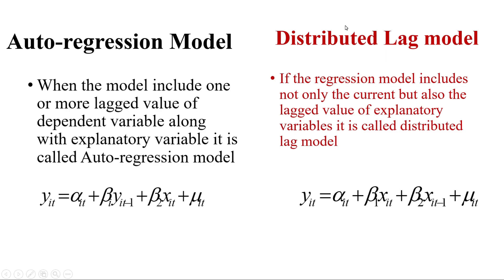There is another kind of model, that is the distributed lag model. If the regression model includes not only the current but also the lag value of the explanatory variable, then it is called a distributed lag model. In the distributed lag model we don't include the lag value of the dependent variable; rather we use the lag value of the independent variables.